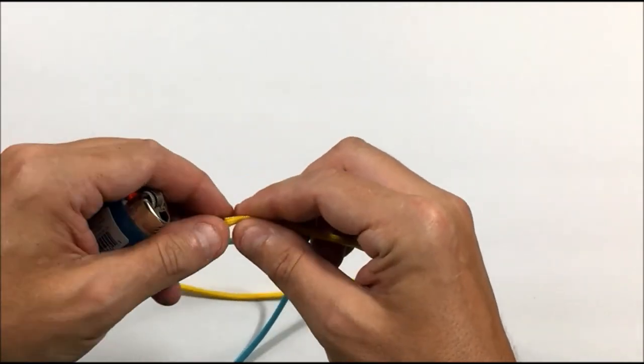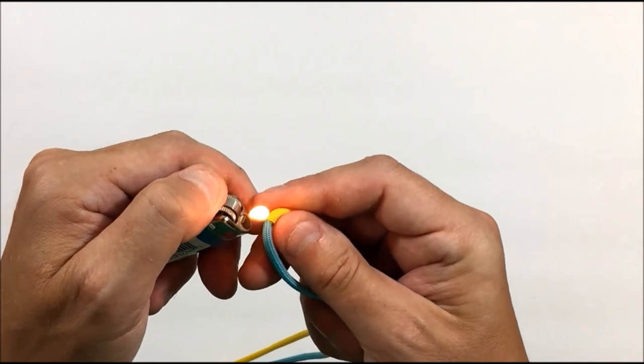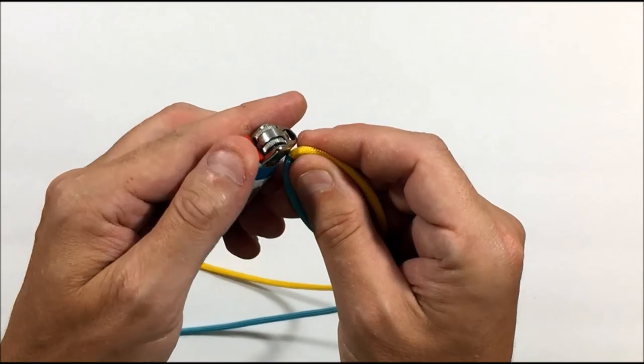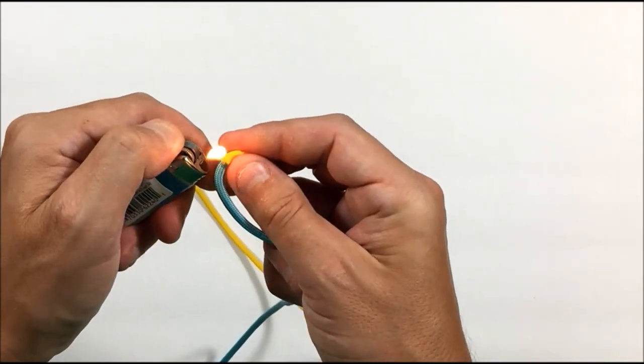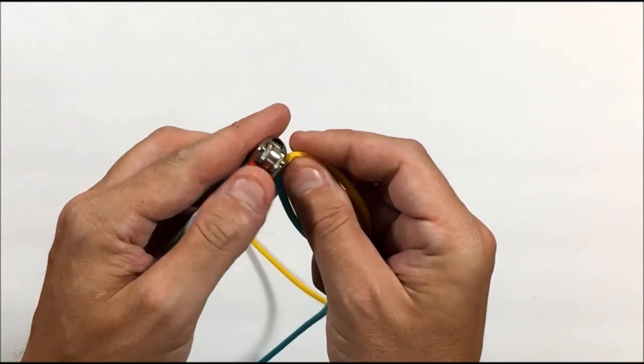And now we're just going to put the lighter on a section, and it doesn't even have to get too hot, and we're just going to roll the cord around. That cools it instantly and it gets it in the shape that you want it.